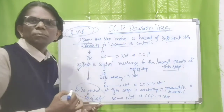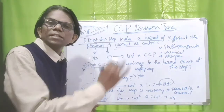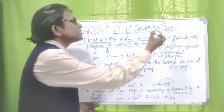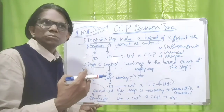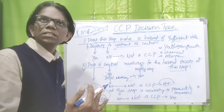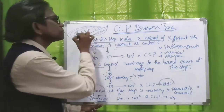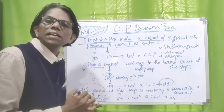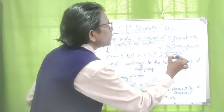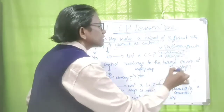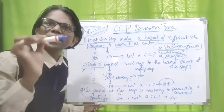Now let us take another product for easy understanding — to check with the CCP decision tree. The product is cooked IQF frozen aquacultured shrimp. We have taken the raw material receiving stage. The significant hazards at this stage are: pathogen contamination and pathogen growth, chemicals such as aquaculture drugs, and allergens. These are the significant hazards identified at the raw material receiving stage for aquacultured shrimp.